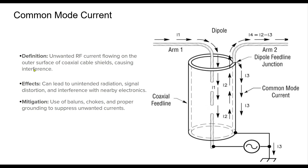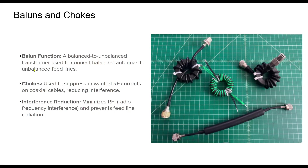Common mode current occurs when RF energy flows on the outer surface of the coaxial cable shield, creating unintended radiation and interference. This can lead to distortion, noise in receivers, and unwanted coupling with nearby electronic devices. The best way to mitigate common mode current is by using balun chokes, which help suppress unwanted currents and ensure that the antenna system operates as intended. A balun — balanced to unbalanced transformer — is commonly used with dipole antennas to transition between the balanced antenna elements and the unbalanced coaxial feed line. Without a balun, unwanted common mode currents may flow on the coax shield, leading to signal distortion and radiation pattern alterations. Chokes, often made from coiled coax or ferrite beads, further suppress unwanted RF currents, ensuring cleaner transmission and reception.